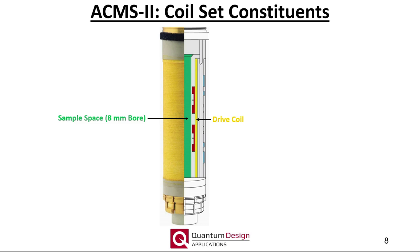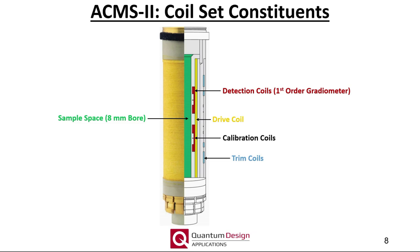The detection coils, shown in red, measure the AC moment of the sample and are wound in a conventional first-order gradiometer arrangement, similar to the detection coils used for the VSM. The trim coils, shown in blue, allow the system to efficiently null the signal, removing as much of the temperature and magnetic field-dependent background contribution as possible. The two single-turn, low-inductance calibration coils are connected in series and situated at the center of each detection coil. The calibration coils simulate a sample with an entirely real response, allowing the system to correct for instrument-dependent variations in phase and amplitude, thus improving measurement accuracy.